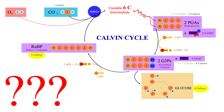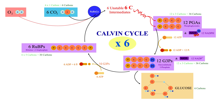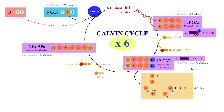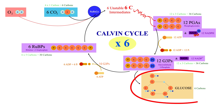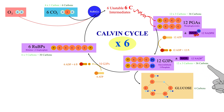But hang on — something doesn't quite add up. We produce two G3Ps, each of which has three carbons. How are we producing glucose, which has six carbons, and RUBP, which has five carbons? In reality, we have to consider six rounds of the Calvin cycle all happening at the same time. We actually need six CO2 molecules to enter the Calvin cycle to produce one molecule of glucose, one for each carbon. With six cycles happening at once, we have 12 G3Ps produced, for a total of 36 carbons. Two of those G3Ps can now be used in the production of glucose, and the remaining 30 carbons can be used for the production of six more RUBPs.